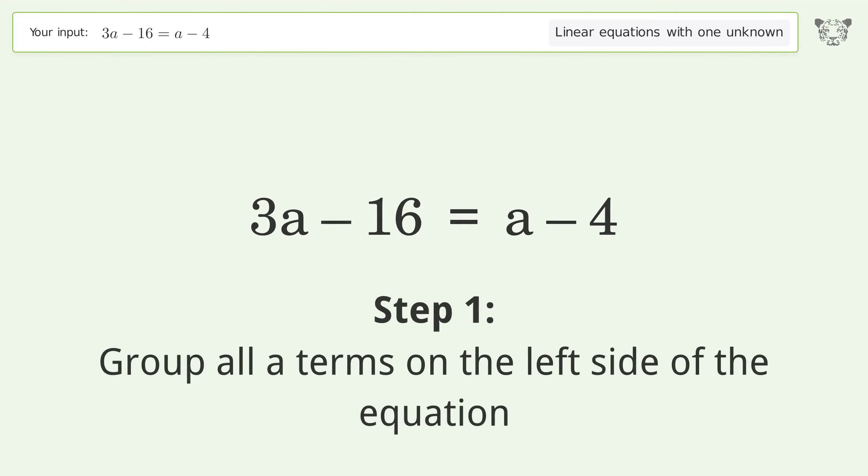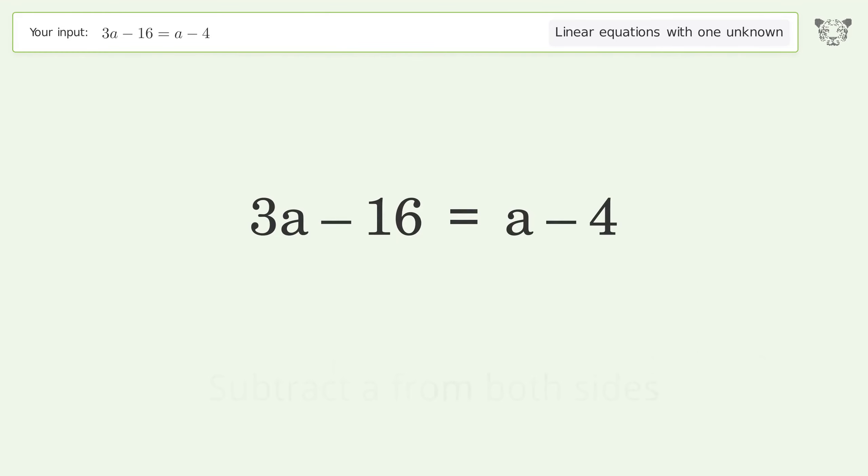Group all a terms on the left side of the equation. Subtract a from both sides. Group like terms. Simplify the arithmetic.